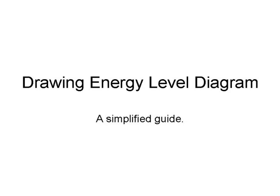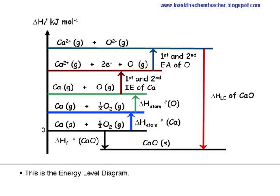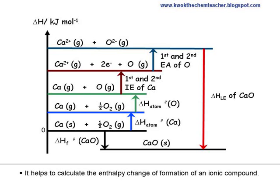This is a simplified guide to drawing an energy level diagram. In the diagram, arrows pointing up are endothermic and arrows pointing down are exothermic. The energy level diagram helps to calculate the enthalpy change of formation of an ionic compound.